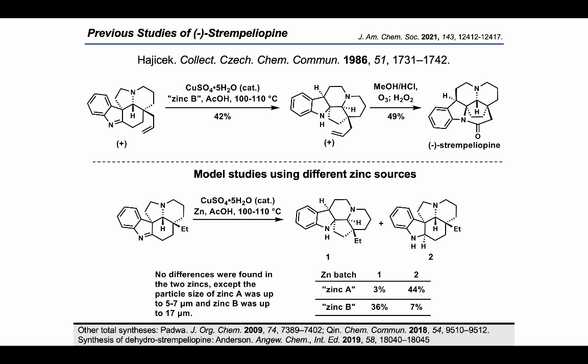In their model studies using different zinc sources, the authors observed that different zinc batches played an important role in the observed reactivity. Using zinc batch A, the undesired imine reduction was observed in 44% yield with only 3% for the desired rearranged product. However, with zinc batch B, selective formation of the skeletal rearrangement was observed in 36% yield with only 7% of undesired reduction. The only noted difference was that zinc A had a particle size up to 5–7 micrometers, while zinc B was up to 17 micrometers.